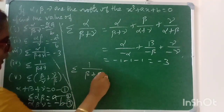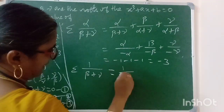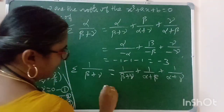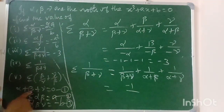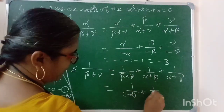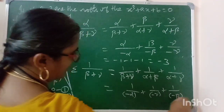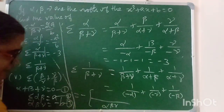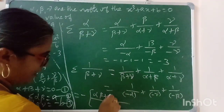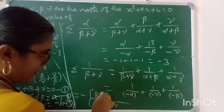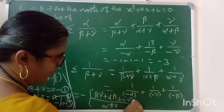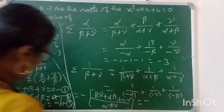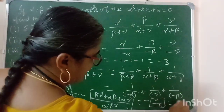Now the summation 1/(beta + gamma) + 1/(alpha + gamma) + 1/(alpha + beta). Since beta + gamma = minus alpha, alpha + gamma = minus gamma, and so on, this becomes 1/(minus alpha) + 1/(minus gamma) + 1/(minus beta), which simplifies to minus 1/alpha minus 1/beta minus 1/gamma. The answer is a/b.